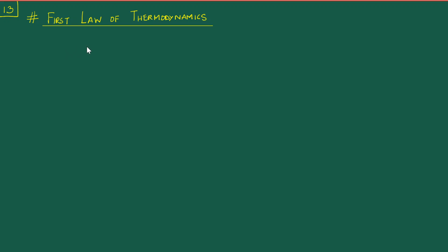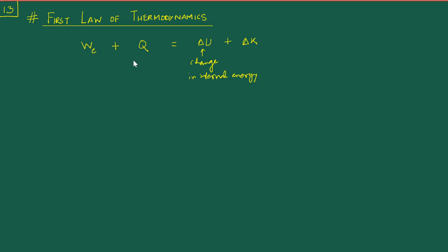From our undergraduate studies, we know that the first law of thermodynamics basically tells us that the total work done by the external forces, when added to the total heat transfer Q given to a body, should be equal to the change in the internal energy and the change in the kinetic energy. Please do not think right away that this U is the potential energy or anything like that — this right now is the internal energy, the change in the internal energy. And Q here is the heat transfer to the body.